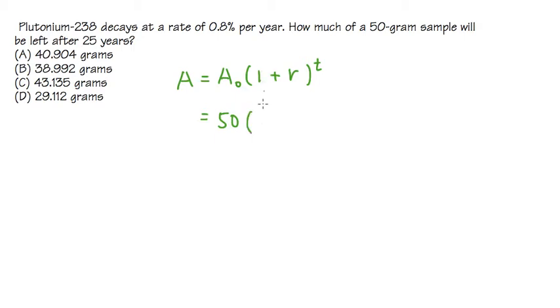And then we open the parentheses, and it's always going to be the 1, because it's 100% in the beginning. But this time, what are we going to use for r? So let's look at this right here. It says it decays at a rate of 0.8% per year. First of all, the decay means it's going to be less and less, so we are going to have a negative rate.